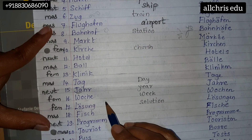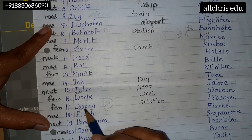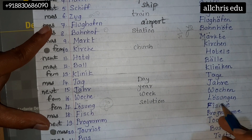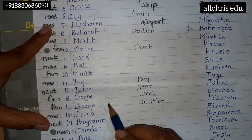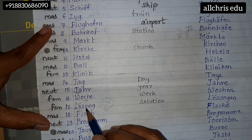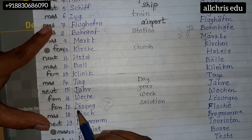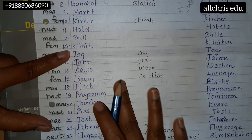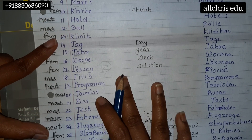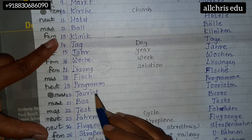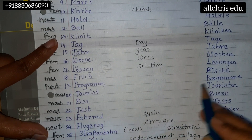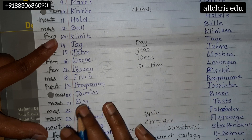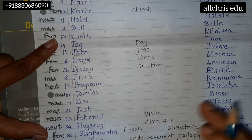Lesung — 'yo' sound. Lesung, Lesungen. Fisch, Fischer. Programm, Programme. Tourist is the same as in English. Tourist, Touristen.